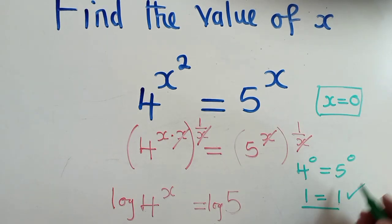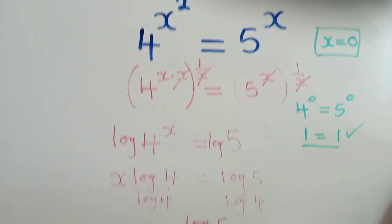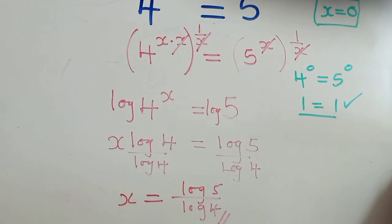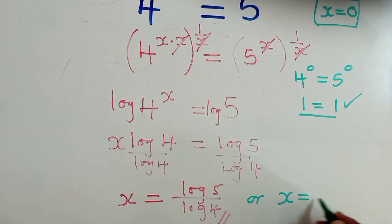Okay, so our solutions are x is equal to log 5 over log 4, or x is equal to 0. So these are the two solutions. Thank you so much for watching. Remember to subscribe. This has been Mr. Chamber Jacob. Bye-bye.